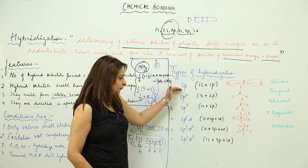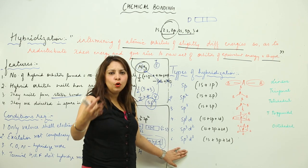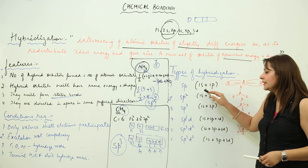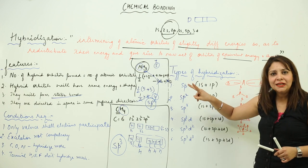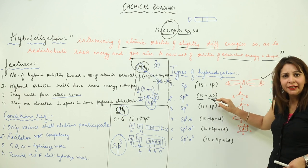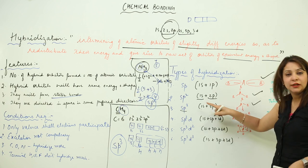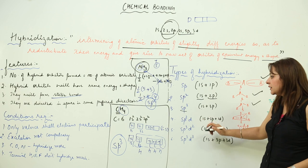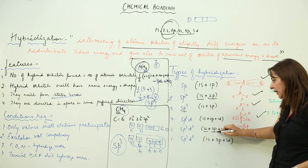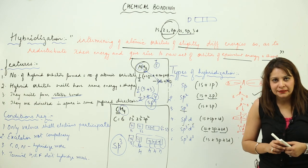There are different types of hybridization. sp hybridization involves 1s and 1p (2 orbitals total) and gives linear geometry. sp2 involves 1s and 2p (3 orbitals) and gives trigonal planar geometry. sp3 involves 1s and 3p (4 orbitals) and gives tetrahedral geometry. sp3d involves 1s, 3p, and 1d (5 orbitals) and gives trigonal bipyramidal geometry. sp3d2 involves 1s, 3p, and 2d (6 orbitals) and gives octahedral geometry.